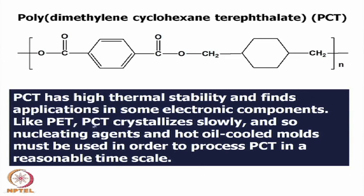Like PET, PCT crystallizes slowly. So addition of some nucleating agents and cooling the molded item using cold oil — that means circulating cold oil through the mold — can develop crystallization in the polymer. During processing of PCT, nucleating agents as well as a hot-oil-cooled mold facility should be used to process PCT in a reasonable time scale.